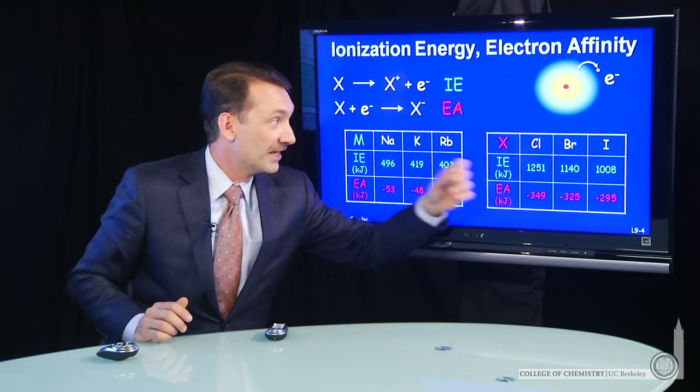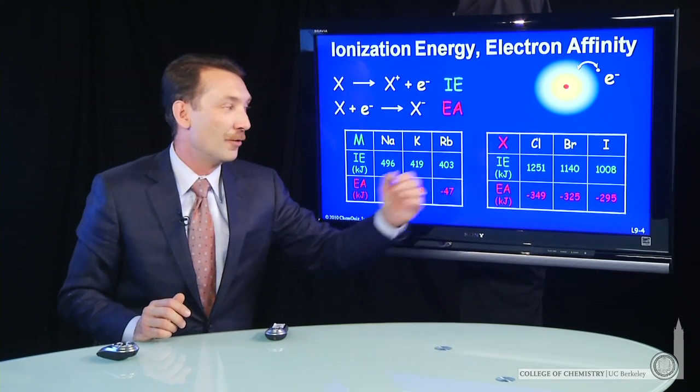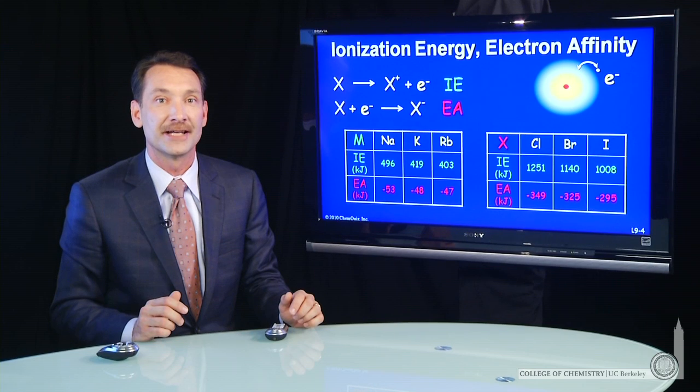Same thing with chlorine, bromine, and iodine. We have a decrease in electron affinity as I go down the column on the periodic table.